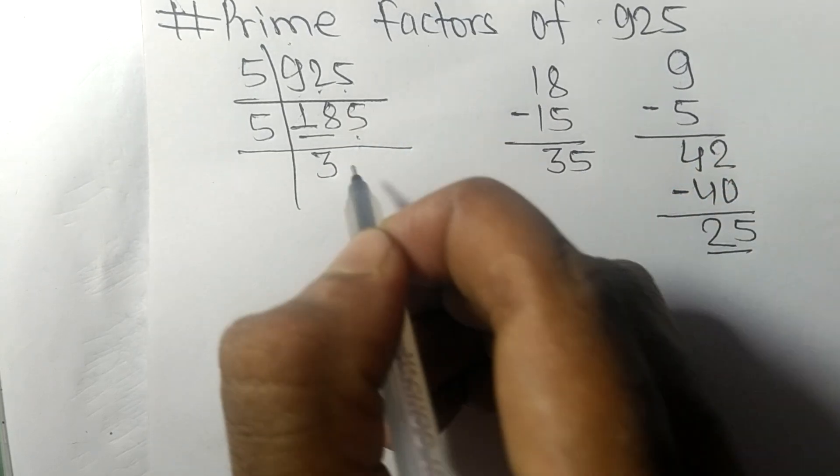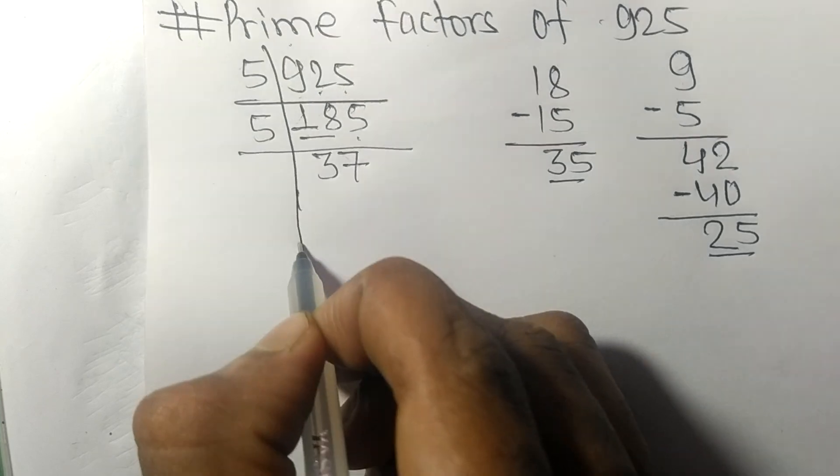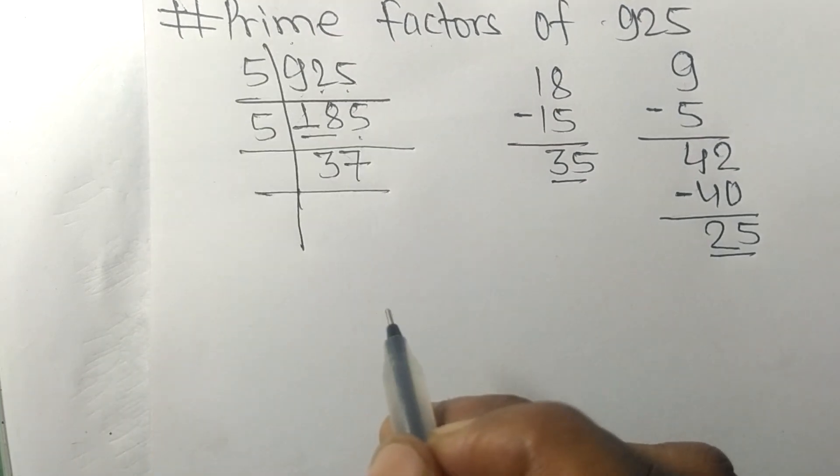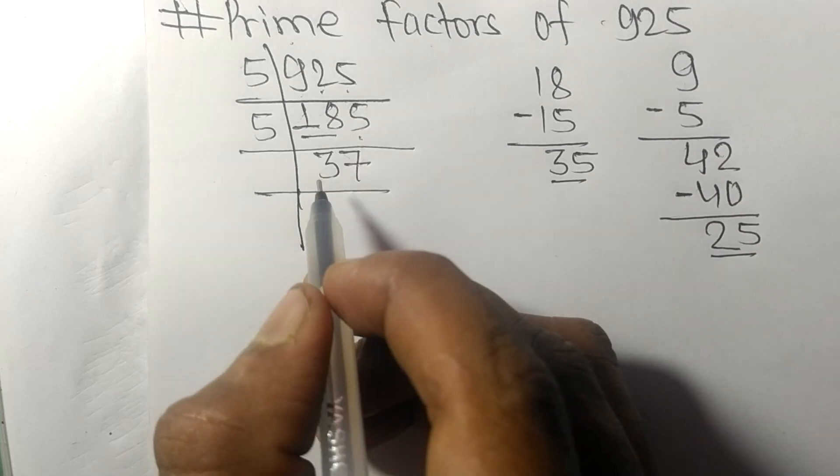5 times 7 equals 35. Now we got 37, which is a prime number.